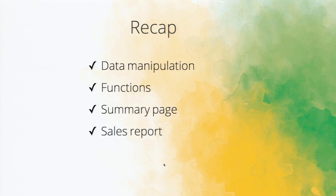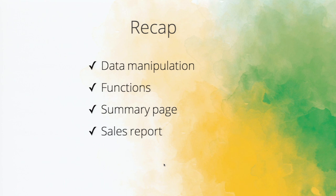As a recap of what we have seen — first we started with the data manipulation, where we fetched the inventory details and updated them back. Next we went through the user-defined functions and how to write one. Then we created a summary page and went through the steps to open the page. Finally, we made an aggregate record task to build the sales report.